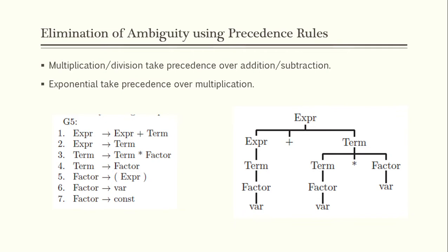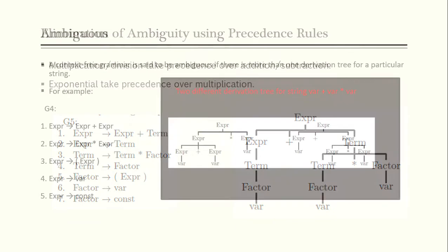If we apply precedence in our grammar, looking at the previous example with two derivations, we prefer the second one because we want multiplication to take precedence. So instead of 'expression equals expression plus expression', we replace it — they actually replace it from the previous one.